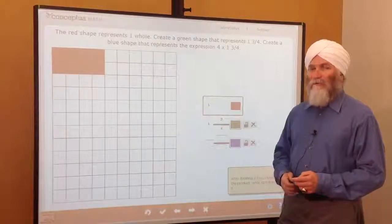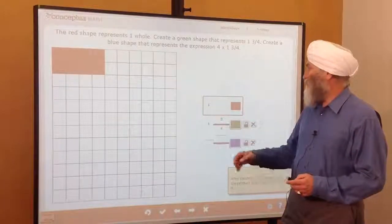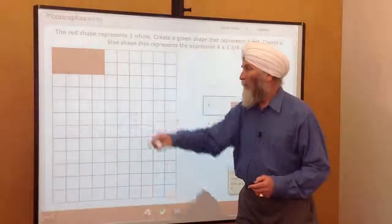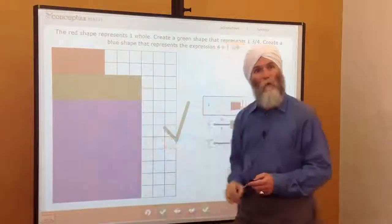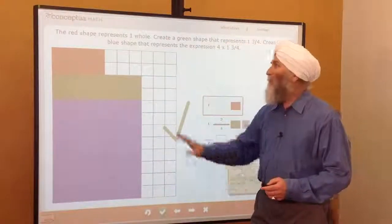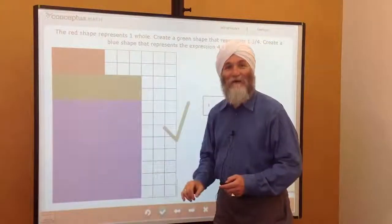The unitizing grid is a great aid in multiplying fractions. If this is one, then this green area will be one-and-three-quarters. It becomes very clear and concrete.